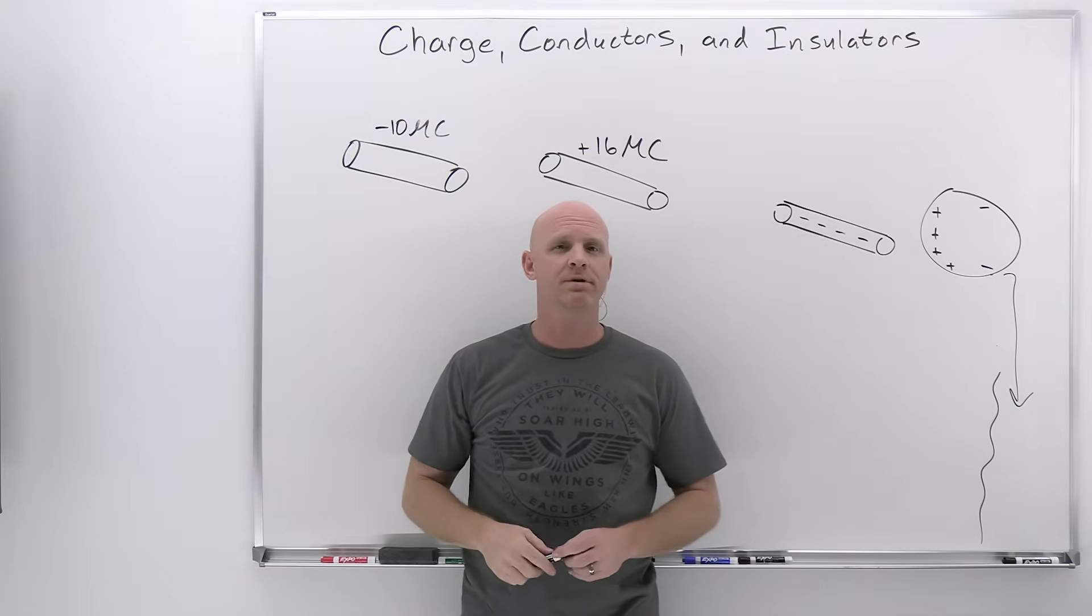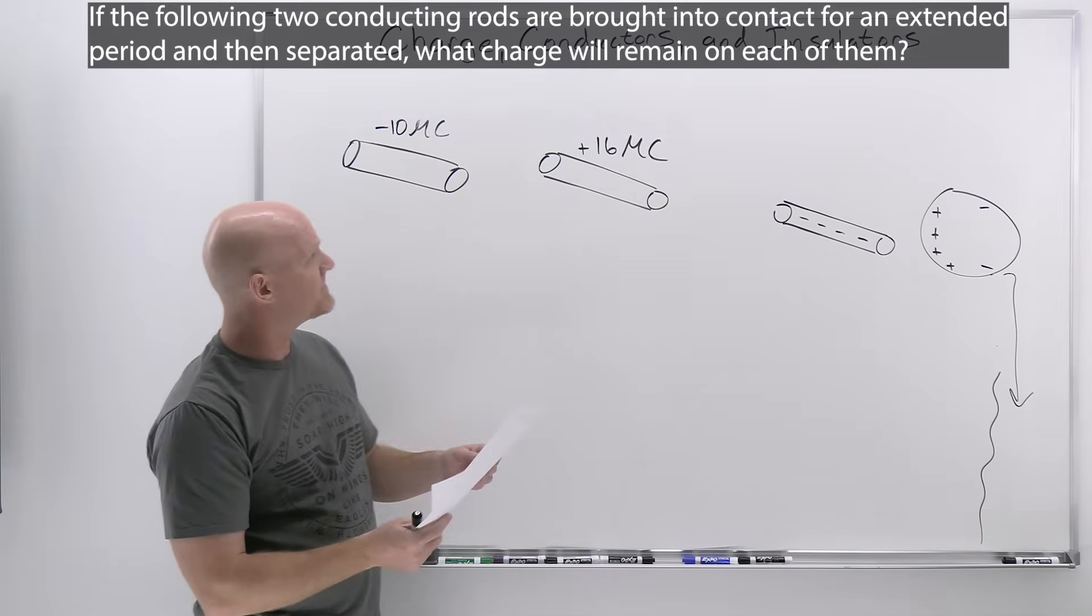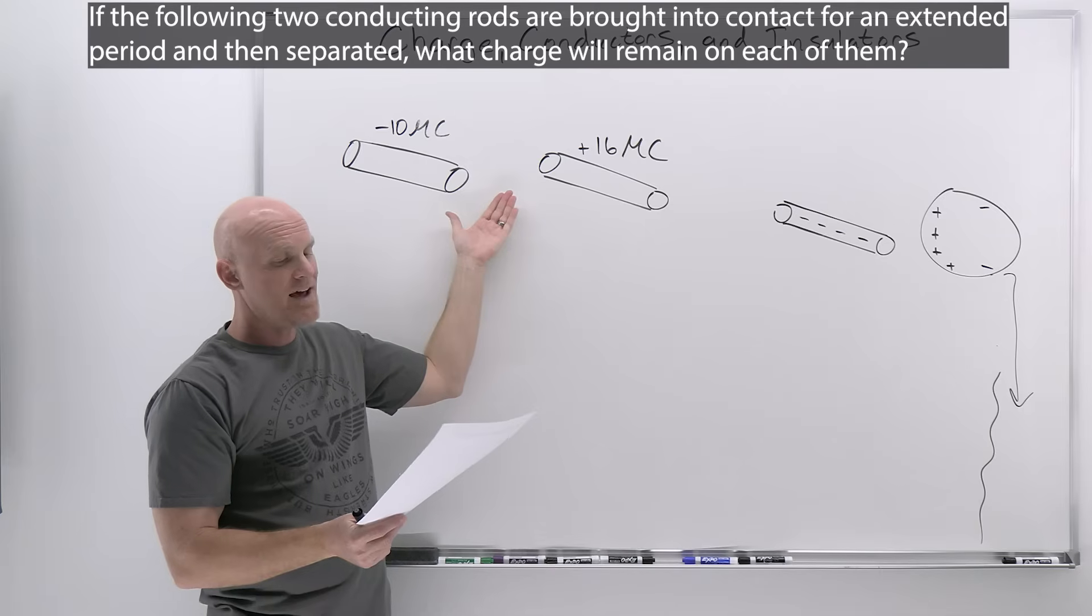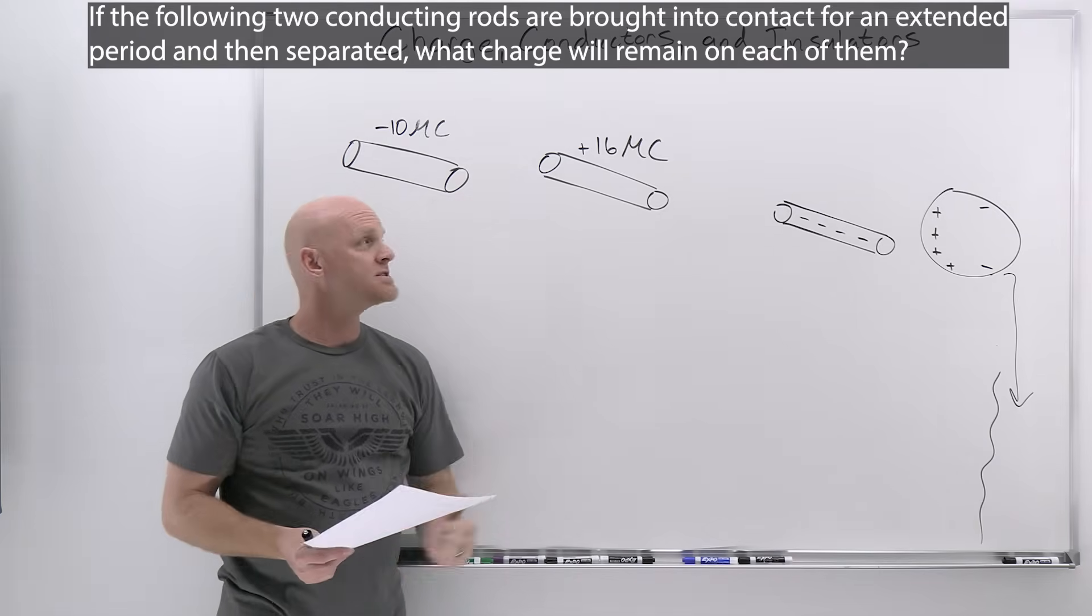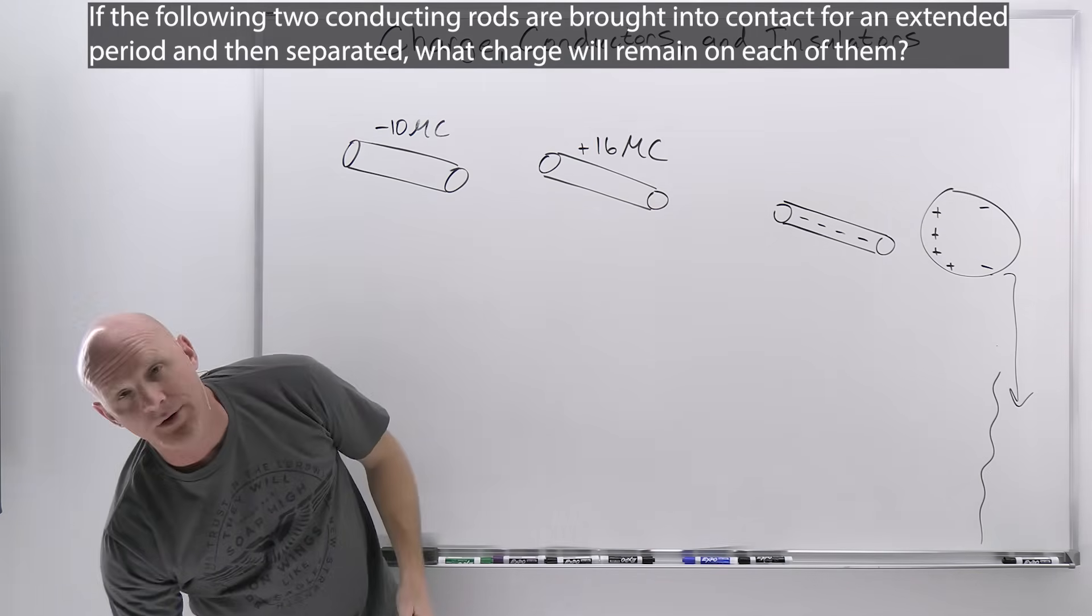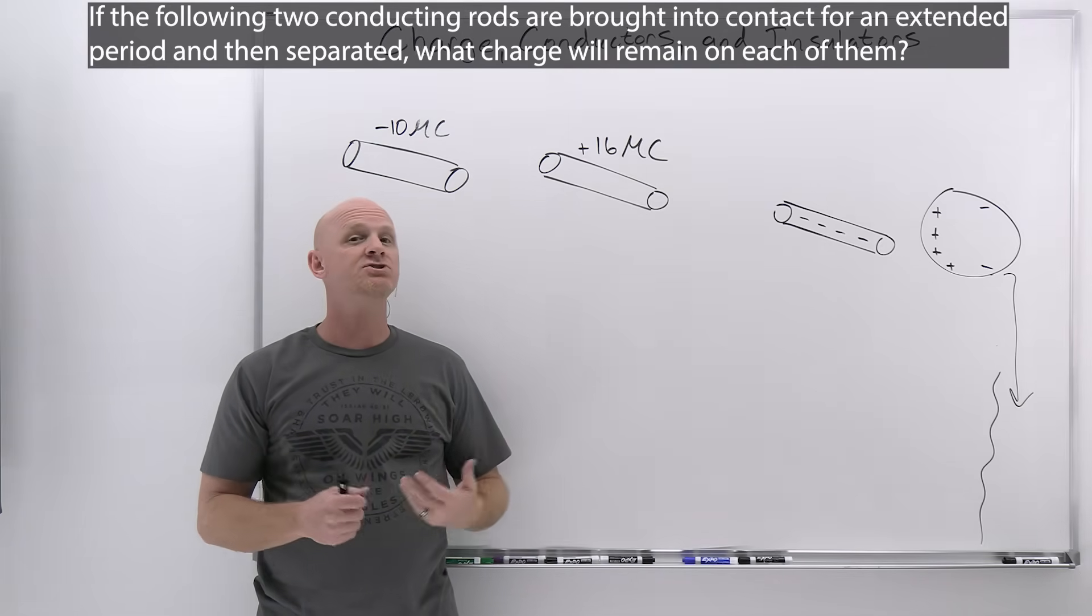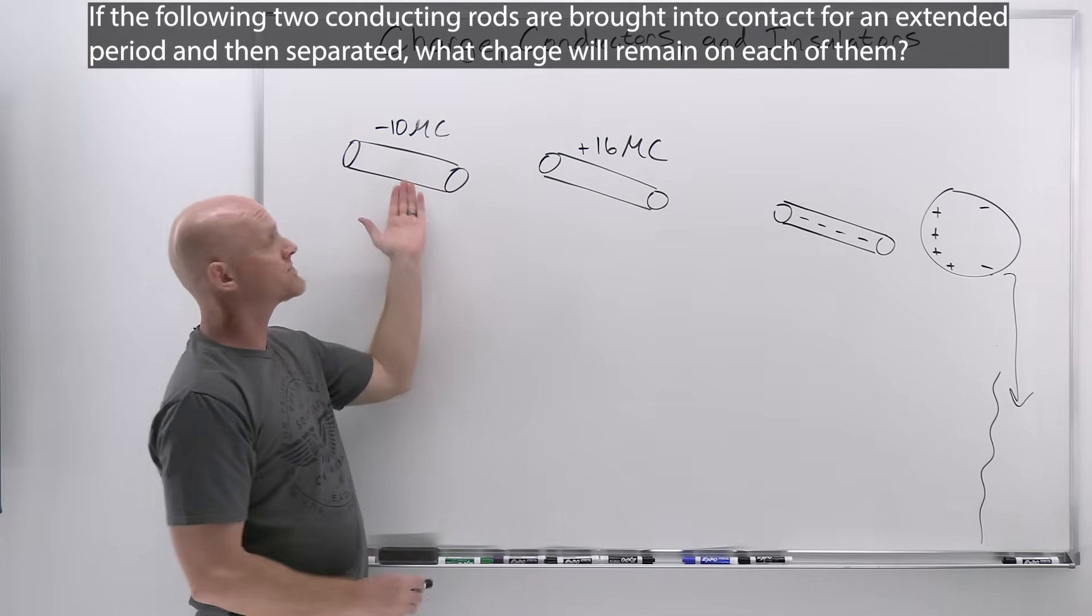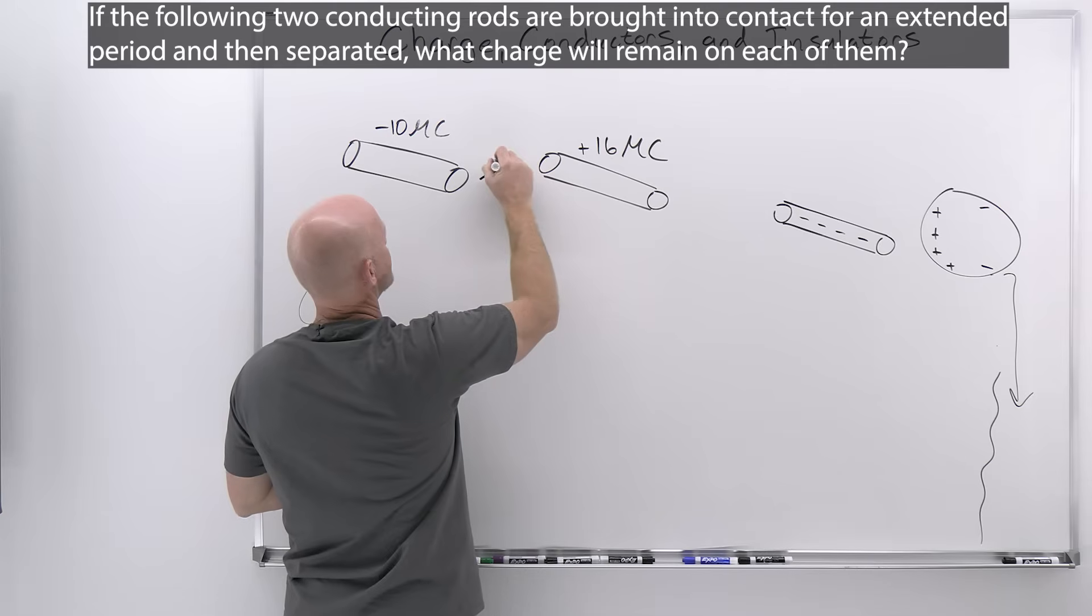We'll finish this lesson with practical application. An example: if the following two conducting rods are brought into contact for an extended period and then separated, what charge will remain on each of them? We've got negative 10 microcoulombs on one, positive 16 microcoulombs on the other. We're going to bring them into contact, which allows charges to be transferred. This is charging by conduction. Electrons are going to transfer from the more negative to the more positive.